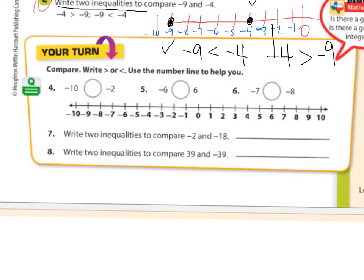Looking at the number line for numbers 4 through 6: negative 10 and negative 2 — negative 10 is to the left, so negative 10 is less than negative 2. Then negative 6 and 6 — negative 6 is on the left, so negative 6 is less than 6. For number 6, negative 7 and negative 8 — negative 7 is on the right side, so negative 7 is greater than negative 8.